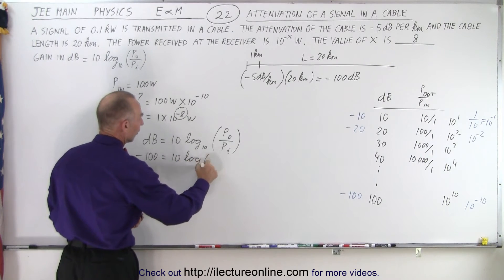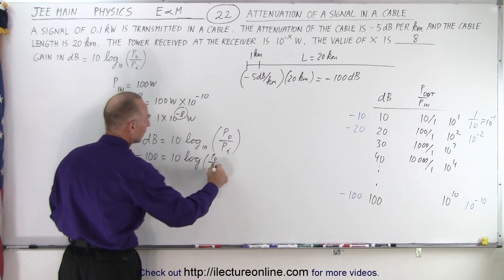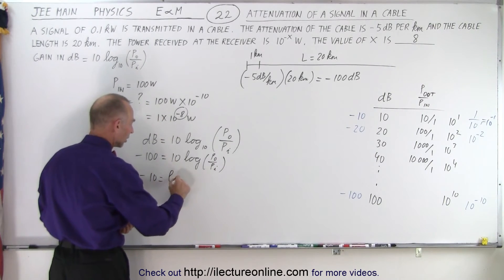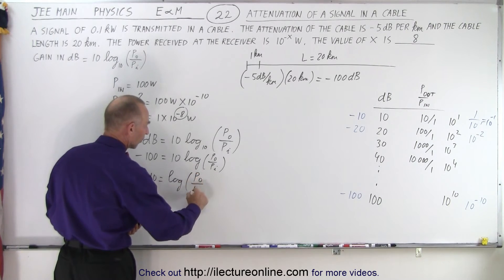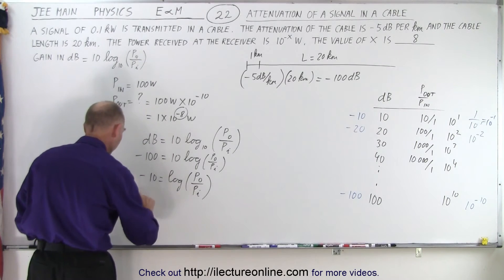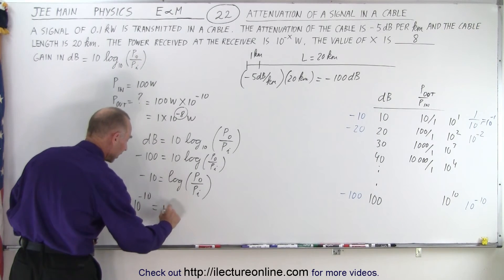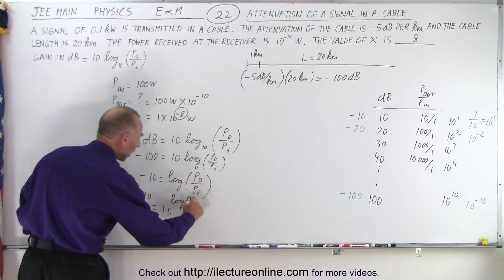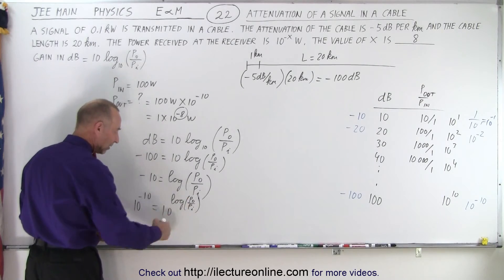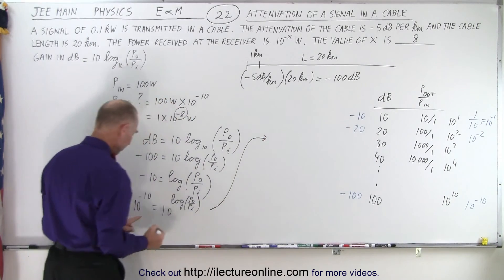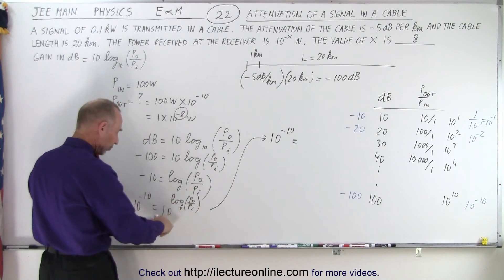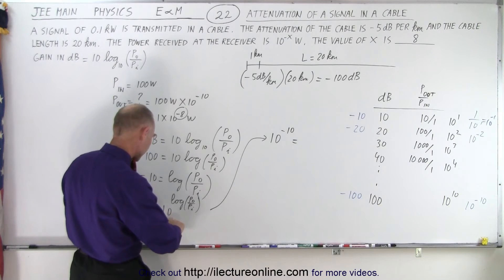We're looking for a 100 dB attenuation, so -100 dB equals 10 times the log of P_out over P_in. Then we take the antilog of both sides, so 10^(-10) equals 10^(log(P_out/P_in)).